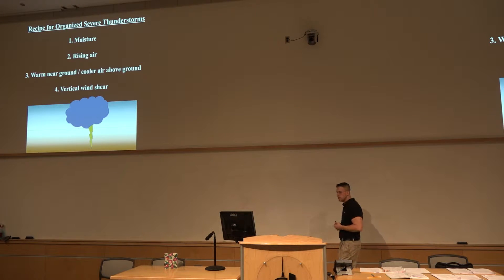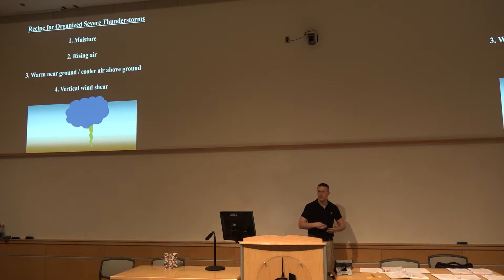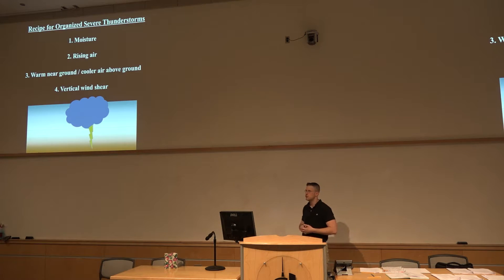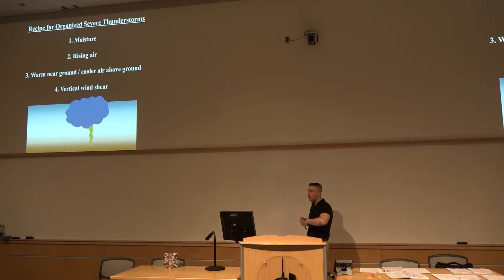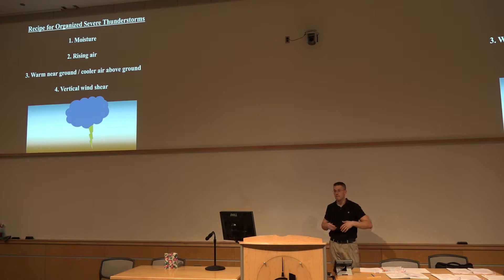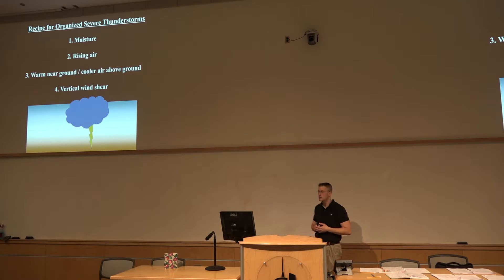Another necessary ingredient for thunderstorms is instability within the atmosphere — specifically, a vertical temperature profile with temperatures decreasing at a sufficient rate with height above the ground. Think of a hot air balloon as a basic conceptual model rising through the atmosphere. If it encounters relatively cooler temperatures aloft, it has a lower density compared to its surroundings and will rise freely on its own without additional forcing.